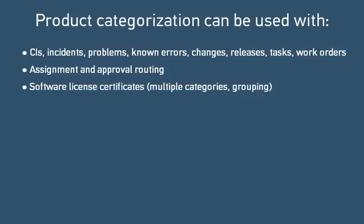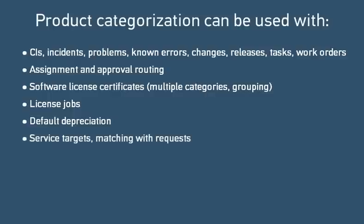A software license certificate can be related to more than one category, and you can group certificates whose categories match. A license job can use product categorization to restrict which certificates it attaches to CIs. You can apply a default depreciation method to CIs based on their product categorization, and you can include product categorization in the criteria that matches requests to a service target.